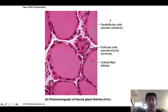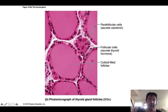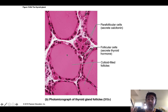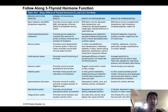Looking at this up close, think about identifying the organ from which the tissue was taken. Make sure to distinguish: if asked for the cell type, the answer is follicular cells; if asked for the substance, the answer is colloid. The follicular cells and the colloid play an important role in the synthesis of thyroid hormone.